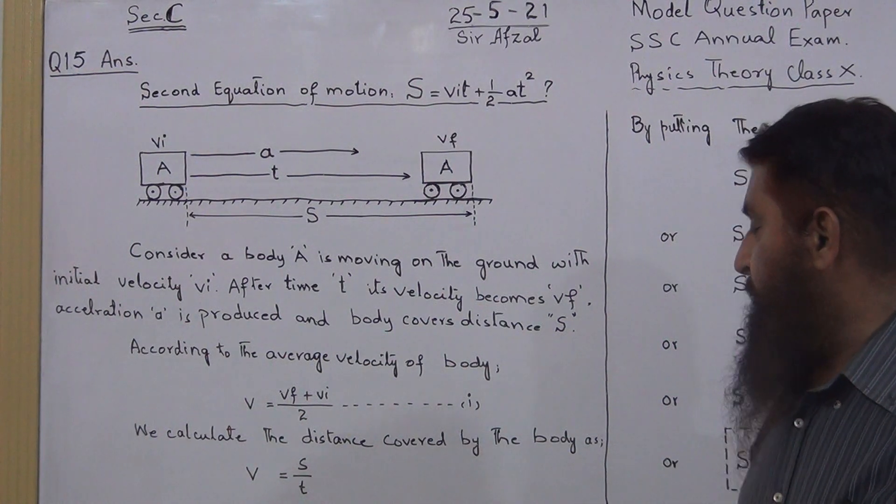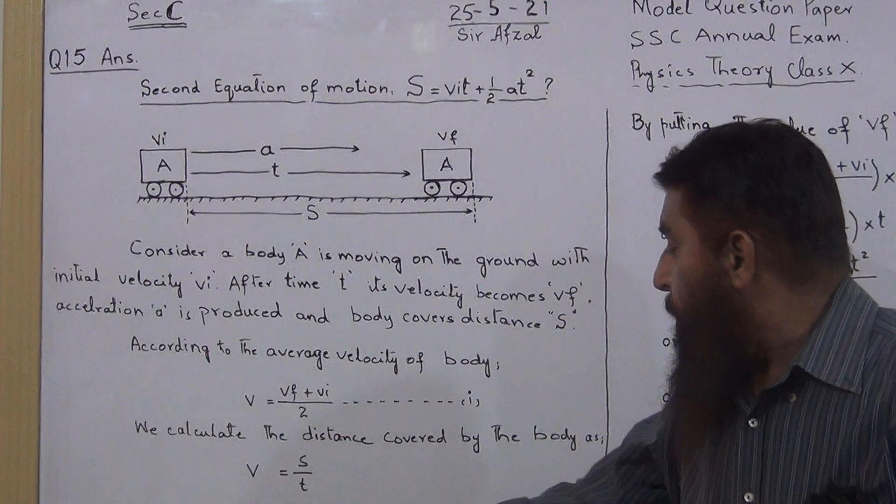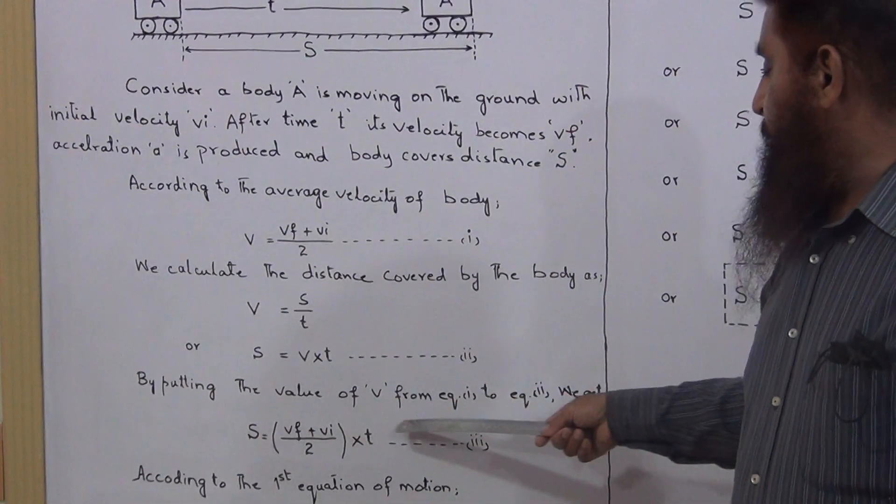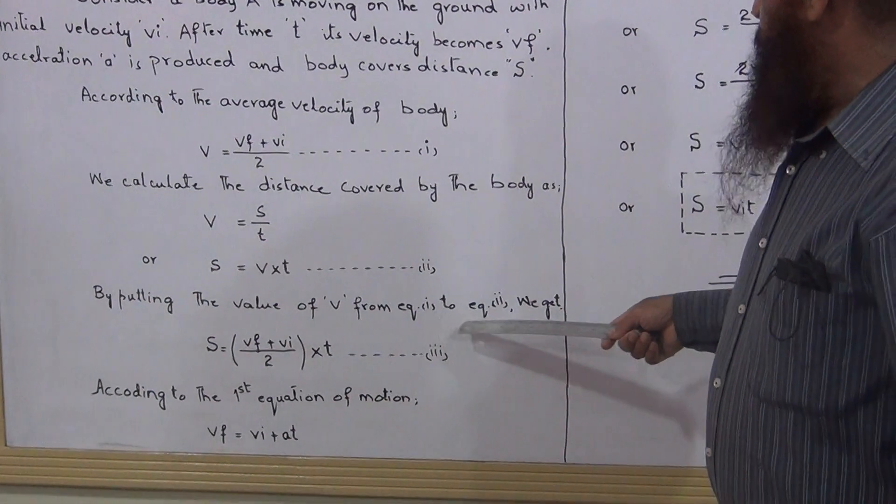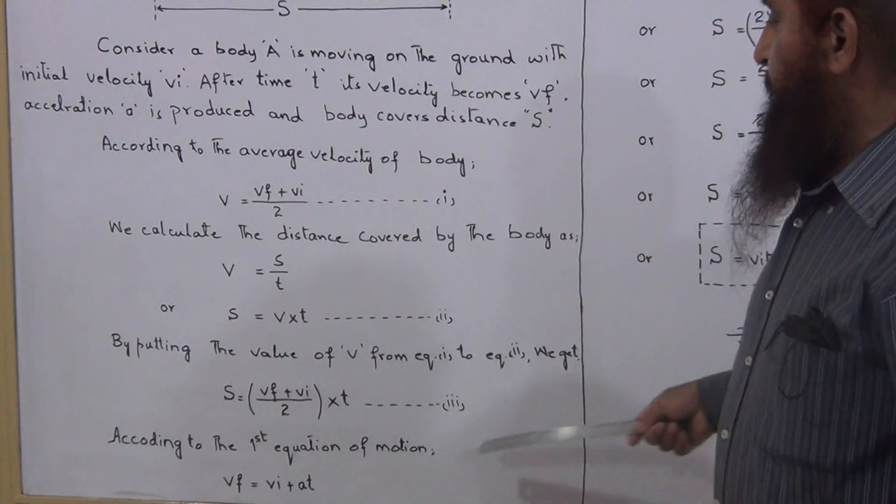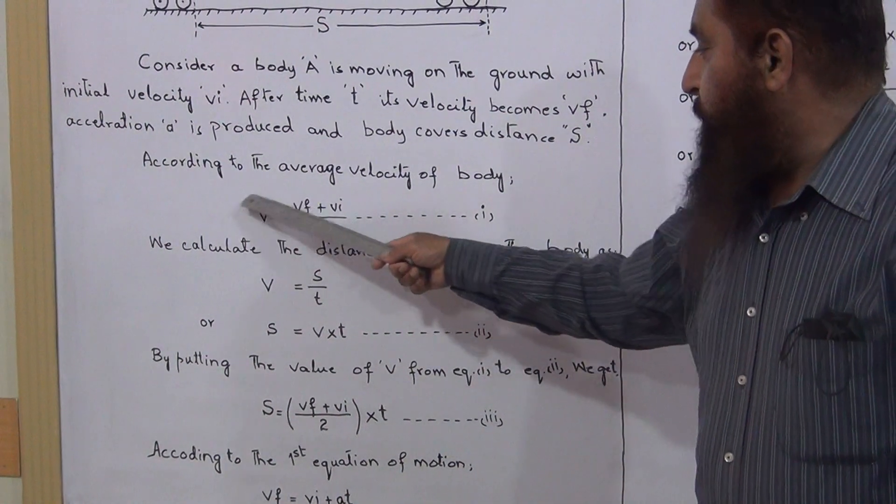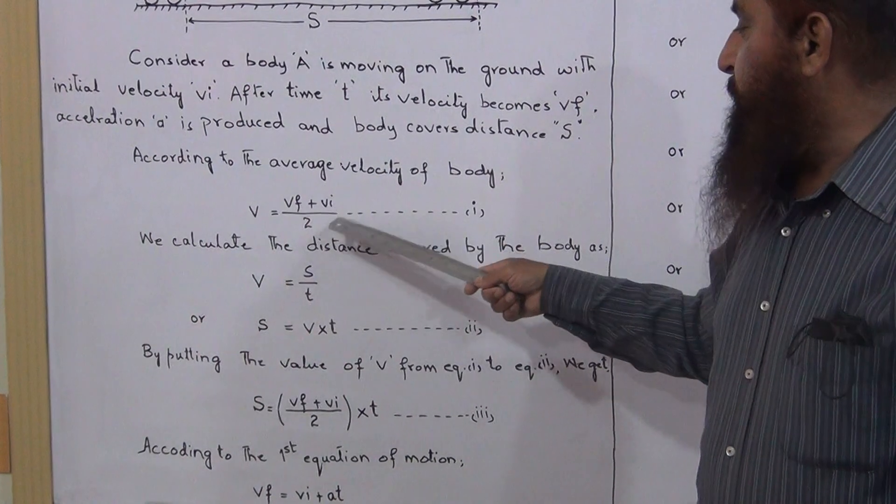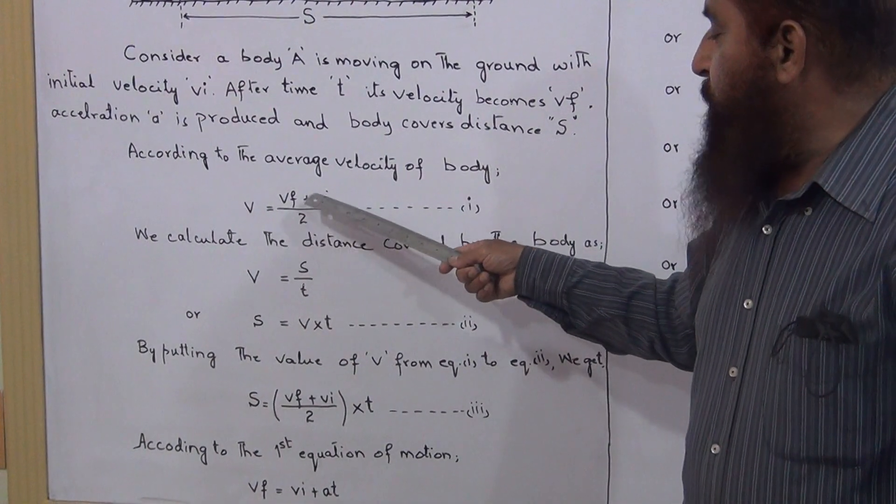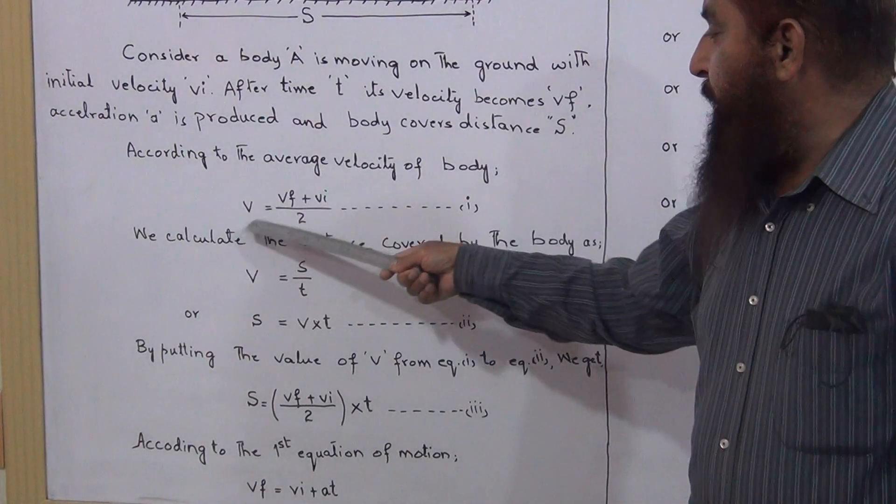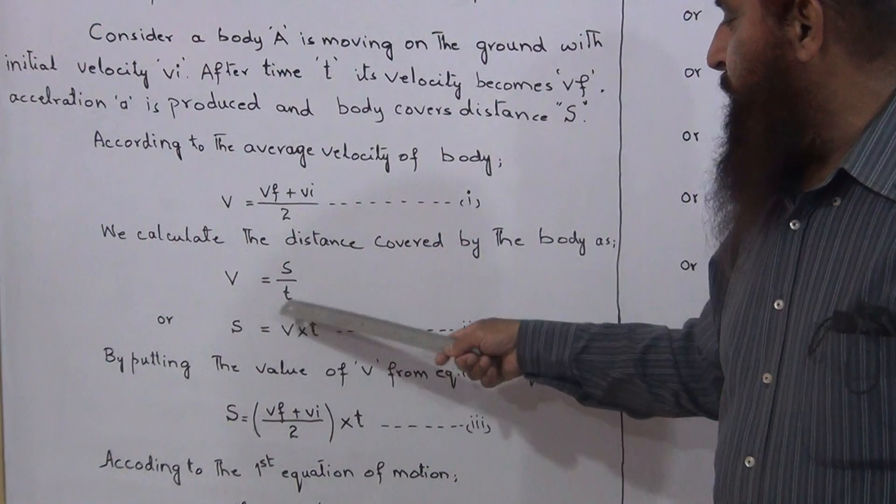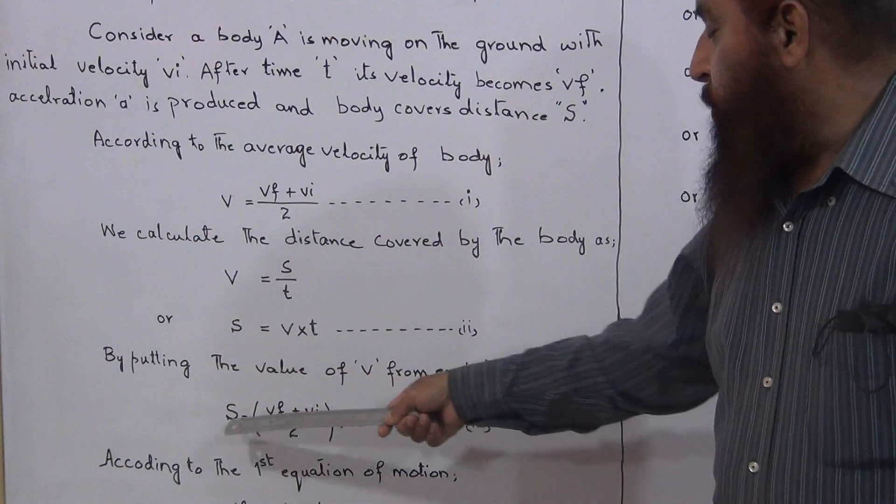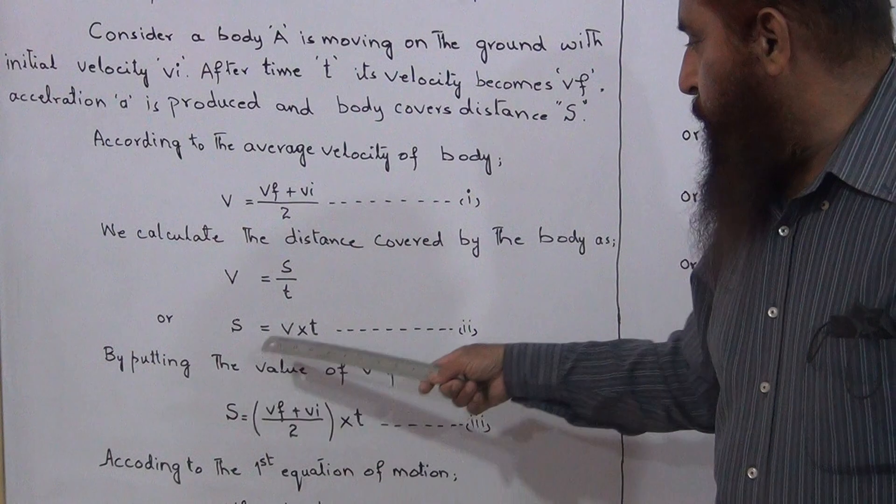Now by putting the value of V from equation 1 to equation 2, we get this one, equation 1. Value of V is (VF + VI)/2 and we are going to put this value of V in equation 2. So we get S = (VF + VI)/2 × T.